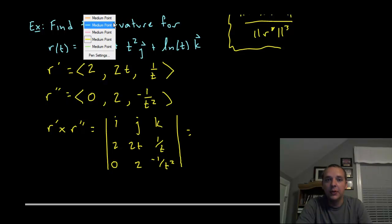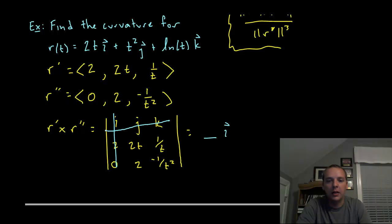I'm going to assume we know how to do this. To get the i-th component, you delete the row and column i is in, you get this little 2 by 2 matrix left, and we take its determinant. So you get 2t times negative 1 over t squared, that's negative 2 over t as the t's cancel, and then minus 2 times 1 over t. That gives us minus 4 over t.